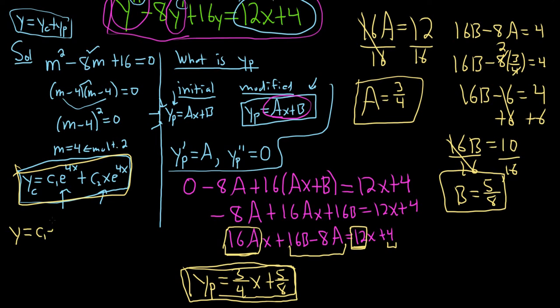It's c1 e to the 4x plus c2 x e to the 4x plus 3 over 4x plus 5 over 8. And that would be the final answer to this problem.